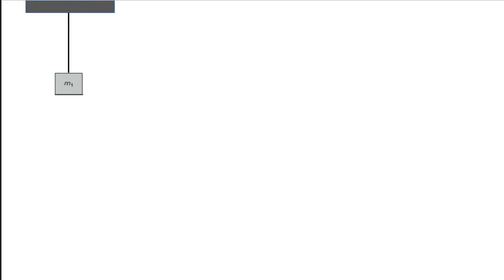Imagine we have a mass one that is hanging from the ceiling, tied on the rope. If there is a mass, there is also a gravitational force. This gravitational force is commonly called weight. If we know the mass of the object, we can compute its weight. Weight is equal to mass times the acceleration due to gravity, which is 9.8 meters per second squared. Therefore, the unit of weight, which is a gravitational force, is equal to Newton.